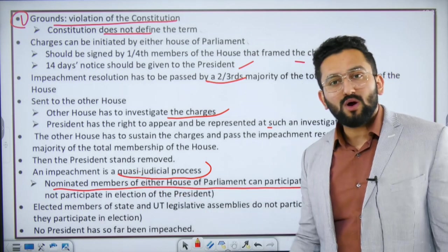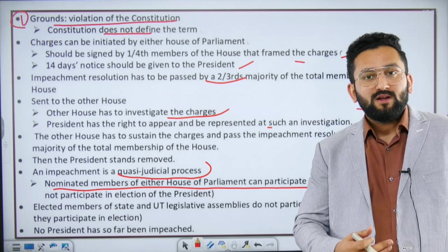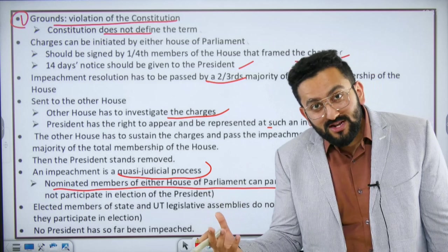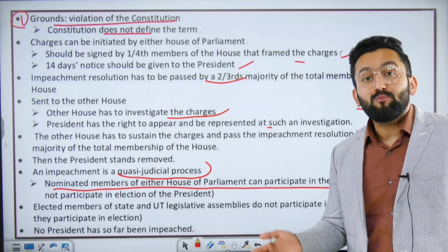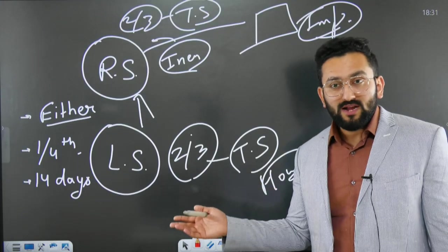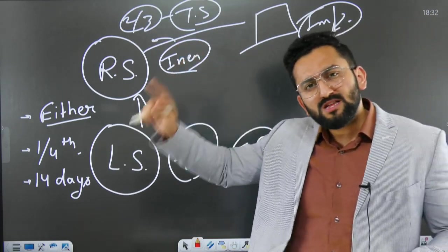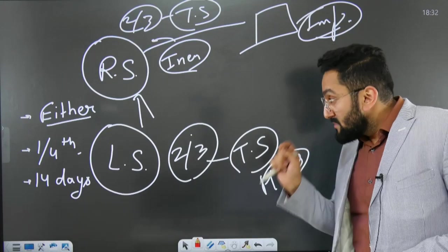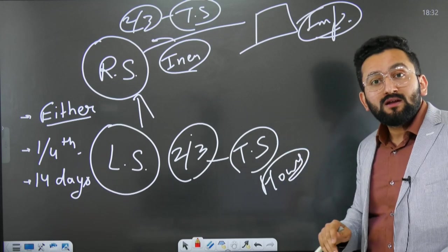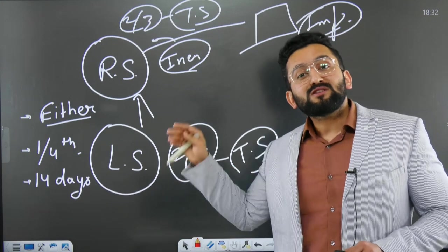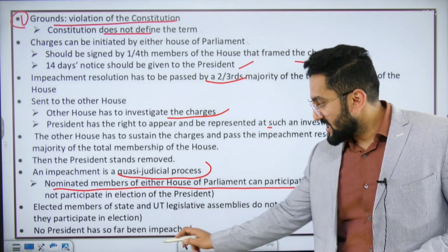No President has so far been impeached in India. The process is clear: one-fourth members frame charges, 14 days' notice is given, resolution passed by two-thirds, then the other house investigates, and that house also passes by two-thirds. Elected members of state legislatures do not participate, but nominated members of Parliament do participate in impeachment.